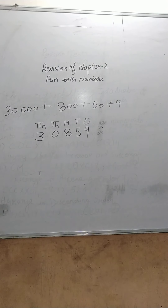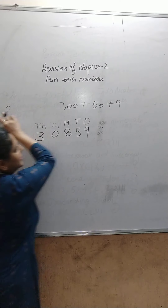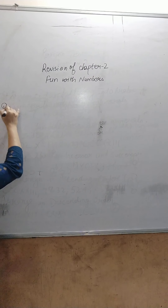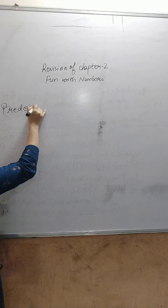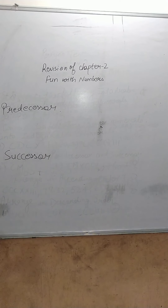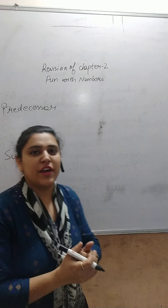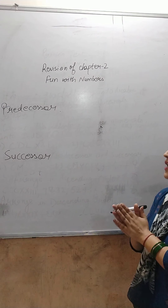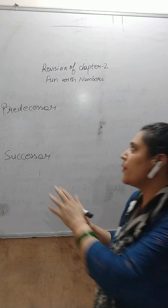I think that is clear to you. Now let's start with the predecessor and successor of numbers. What is predecessor? Predecessor means the number that comes just before the given number — what comes before.